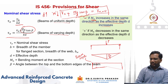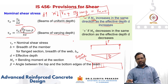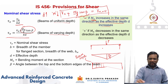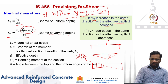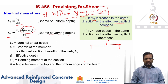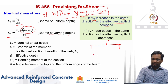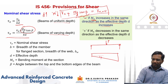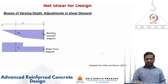Here, M_u is the bending moment at the section and β is the angle between the top and bottom edges of the beam. For the case where depth increases in the direction of increasing bending moment, we look at the free body diagram to understand how this additional vertical component arises.